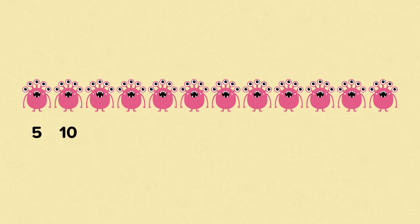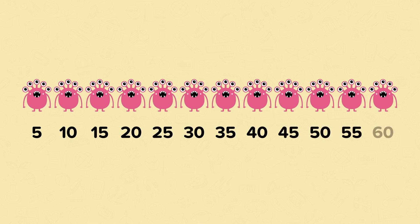5, 10, 15, 20, 25, 30, 35, 40, 45, 50, 55, 60. 12 lots of 5 is 60. There are 60 eyes altogether.